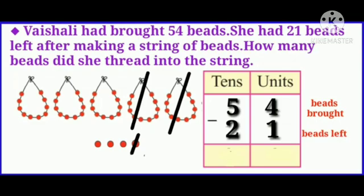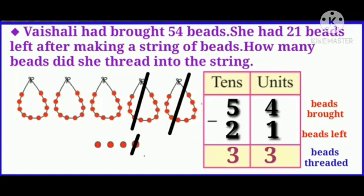So let us solve the example. Beads brought: 54. Now we will subtract 21 from 54. Remember, children, always start subtracting from the units column first. 4 minus 1 is equal to how much? Yes, 4 minus 1 is equal to 3. And now in the tens column, 5 minus 2 is equal to how much? Yes, 5 minus 2 is equal to 3. So Vaishali threaded 33 beads into the string.